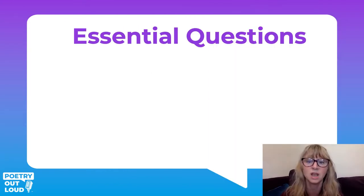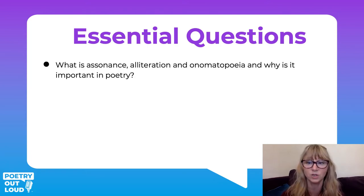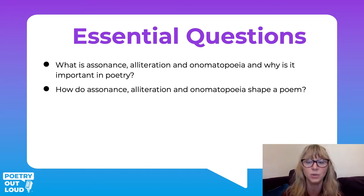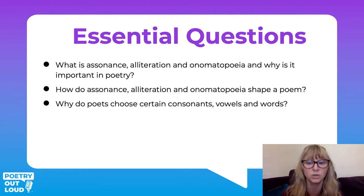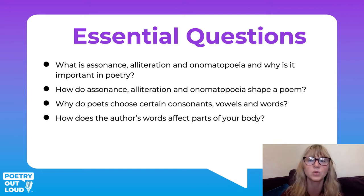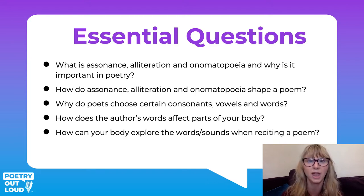We've got some essential questions that we're going to ask and answer. What is assonance, alliteration, and onomatopoeia, and why is it important in poetry? How do assonance, alliteration, and onomatopoeia shape a poem? Why do poets choose certain consonants, vowels, and words? How do those authors' words affect us in our bodies? And how can students explore those words and sounds when reciting a poem?